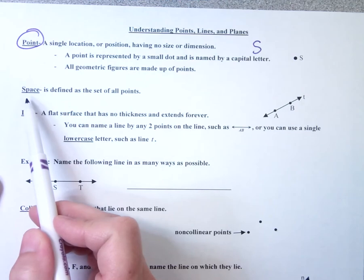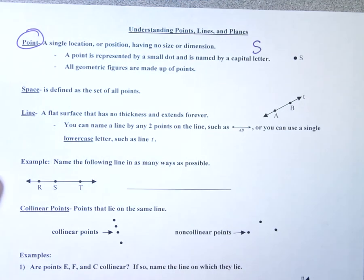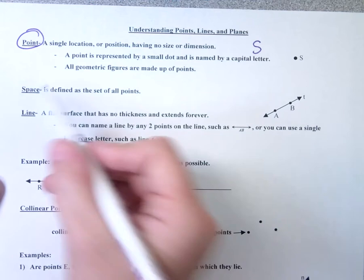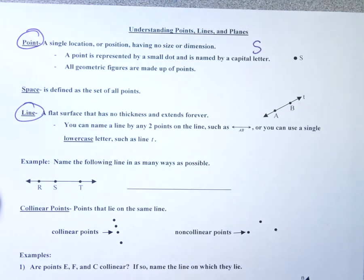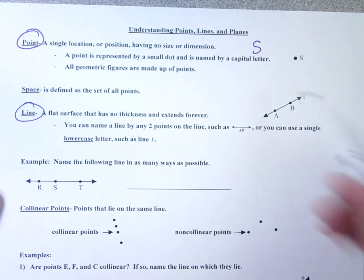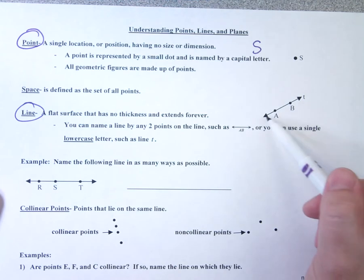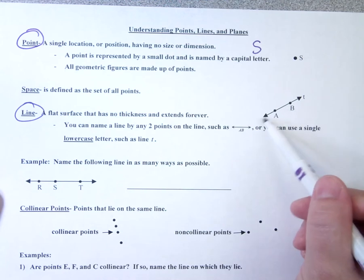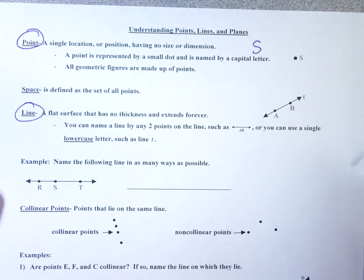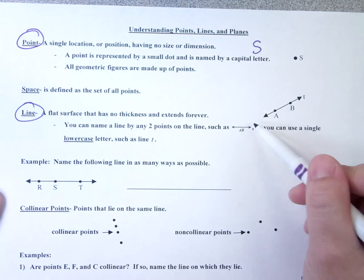Space is defined as the set of all points. A line is a flat surface — it has no thickness and it extends forever in both directions. The arrows on both ends indicate that it goes forever this way and forever this way. That's specifically what a line does: it goes forever in both directions.